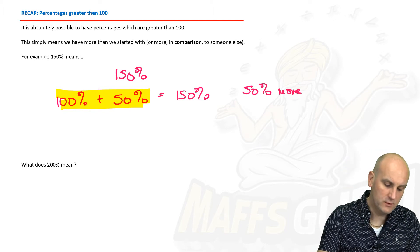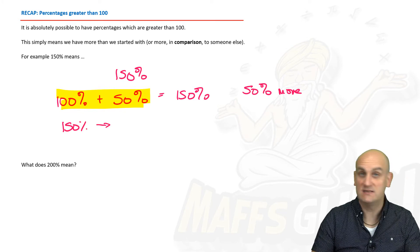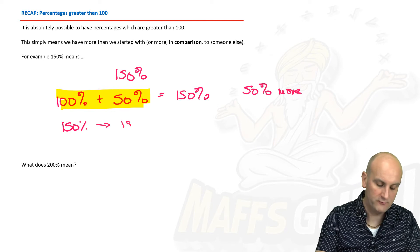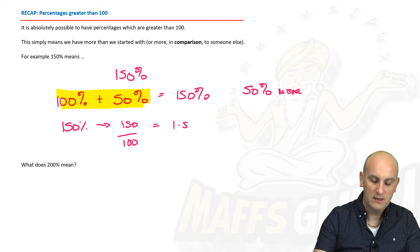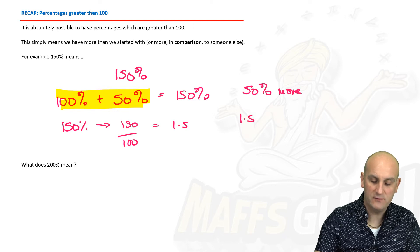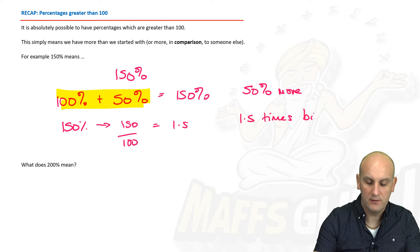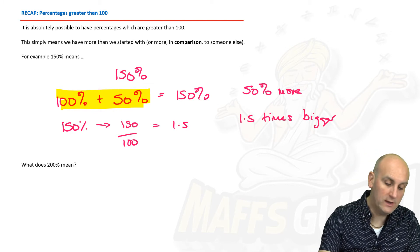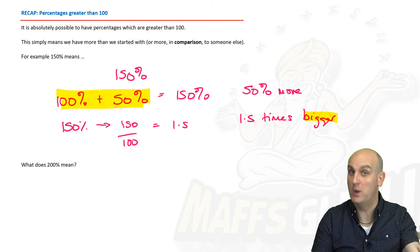Or, believe it or not, 150%. If I turn that back into a decimal, how do I do that? I do 150 divide it by 100, which gives me 1.5. Or I've got 1.5 times what I started with, or it's 1.5 times bigger. How do I know it's bigger? Because 150% is bigger than 100%.